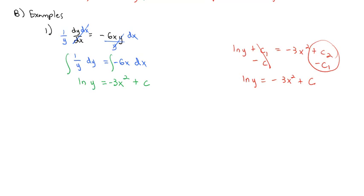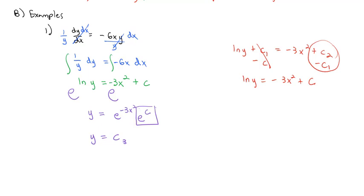Now, because we have a natural log of y and we'd like to have y equals, I'm going to exponentiate both sides — take e to the power of both sides. Because when we take e to the natural log, that just leaves y. And when I take e to the negative 3x squared plus c, that's e to the negative 3x squared times e to the c, by adding exponents. But e to the c, where e is just a constant, I can write that as a constant times e to the negative 3x squared. This is the final solution to my differential equation.